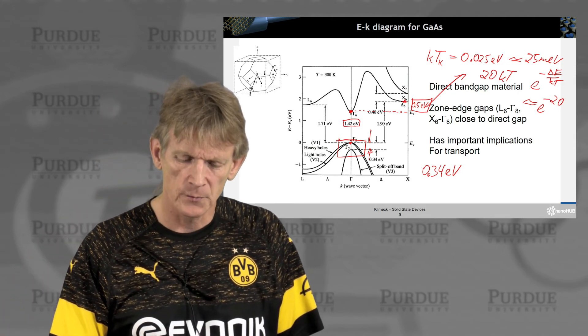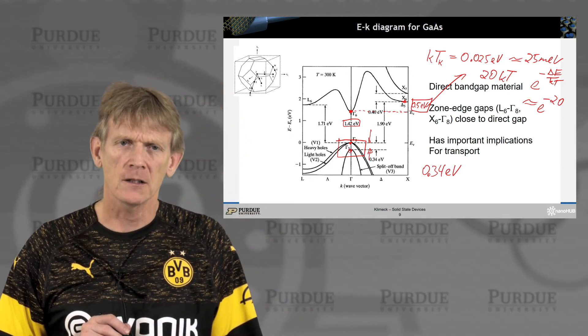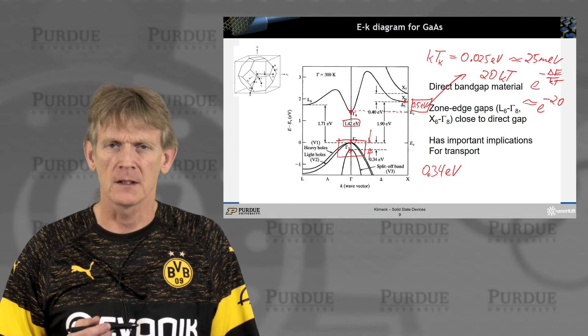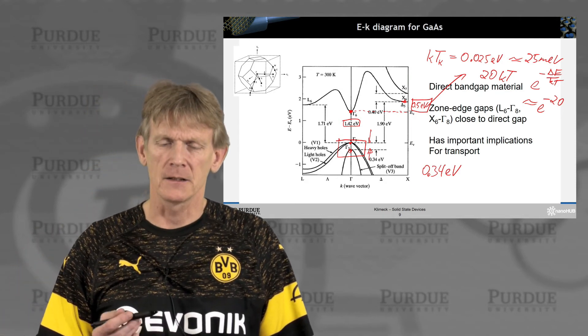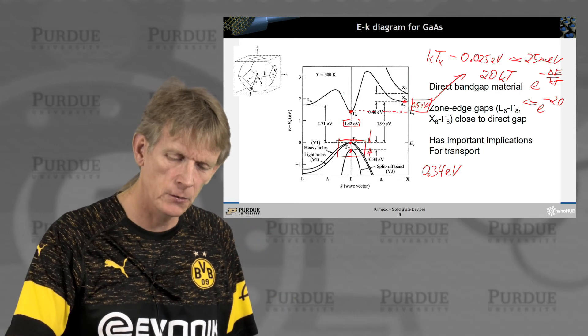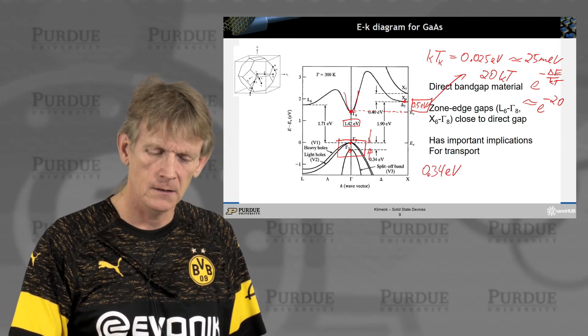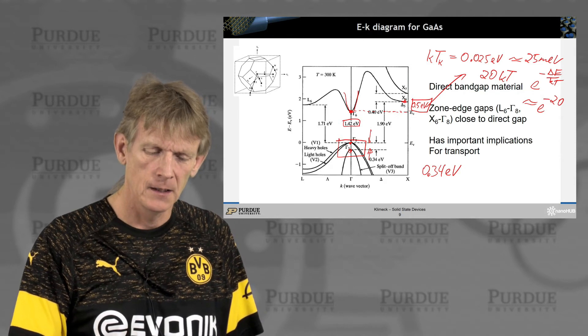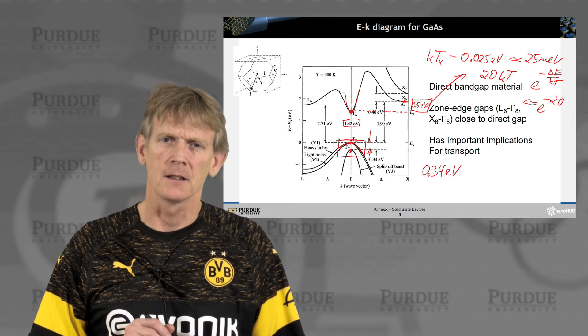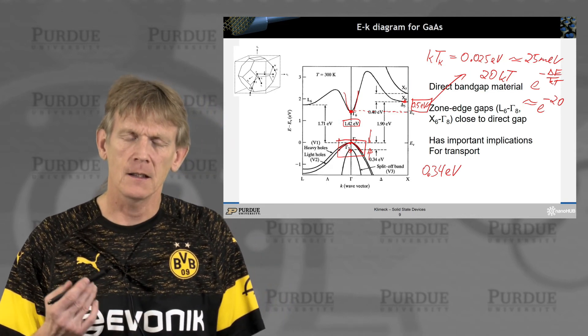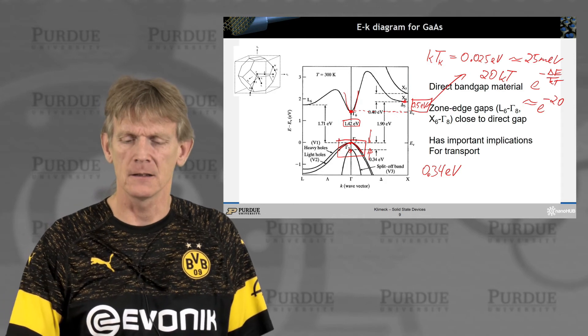That would be the occupation of states way up here in energy. So these bands exist, or the split-off band exists in terms of number of holes. The typical occupancy of holes and electrons at those energies far apart is typically negligible. So we typically focus, for gallium arsenide here, on the conduction band as a single band, and we typically focus on light hole and heavy hole bands here as well. So that explains a little bit of the approximations that you will see later in this course.